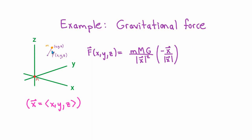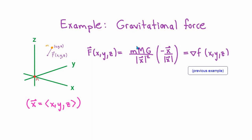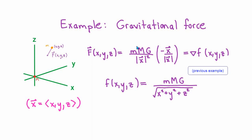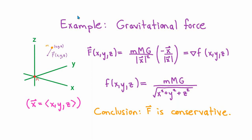If you've taken basic physics, given two point masses M and m in space, the gravitational force exerted on m by M is inversely proportional to the square of the distance between the two points, and it points from m toward M. This force can be written as the gradient of the function f = mMG / √(x² + y² + z²), where M is placed at the origin. This shows that the force of gravity is a conservative force.